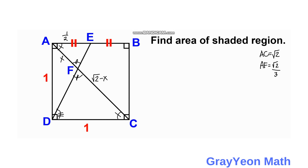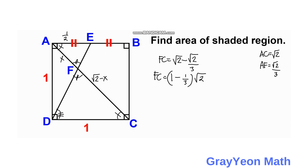Next, we determine segment FC. FC is equal to √2 minus X, which is √2 minus √2/3. That simplifies to (1 minus 1/3) times √2, so FC equals (2/3)√2.